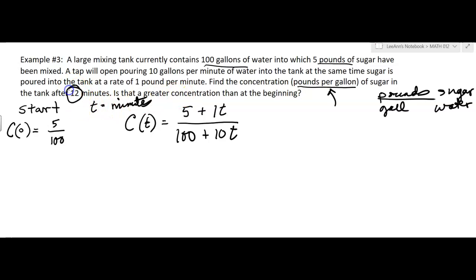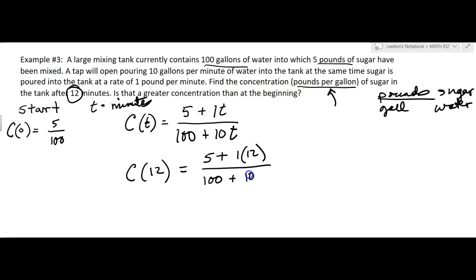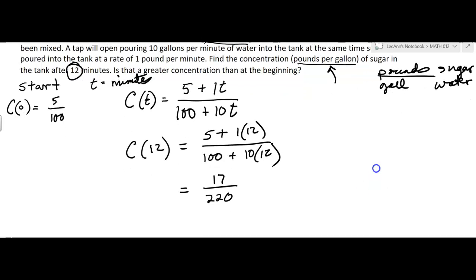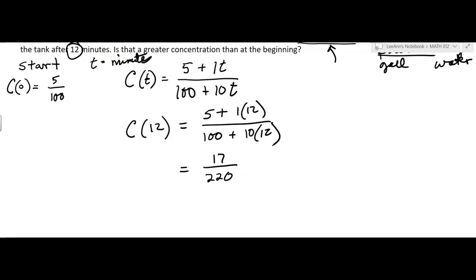It asks us to find the concentration after 12 minutes, so we evaluate C(12). After 12 minutes we're adding 120 gallons of water and 12 pounds of sugar, giving us 17 over 220. Pulling out the calculator: 17 divided by 220 is about 0.077.